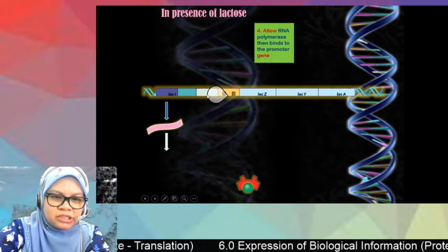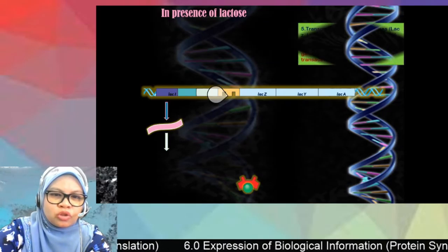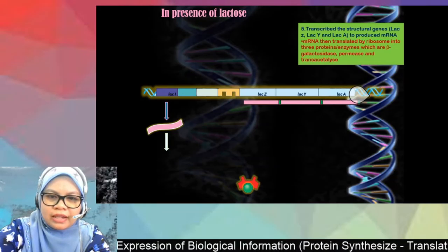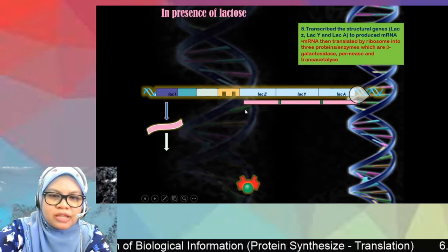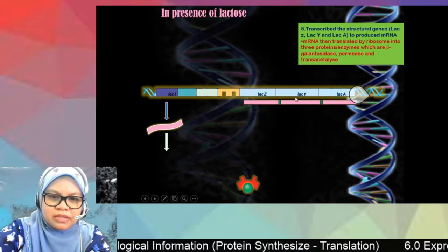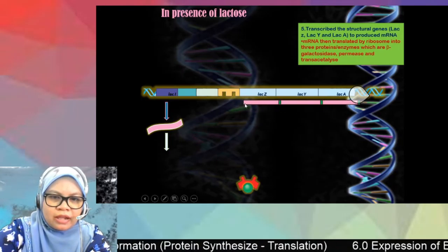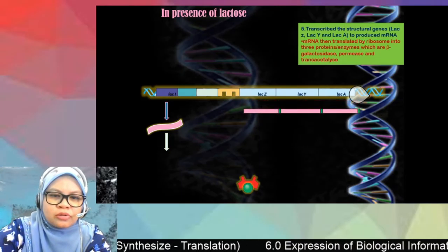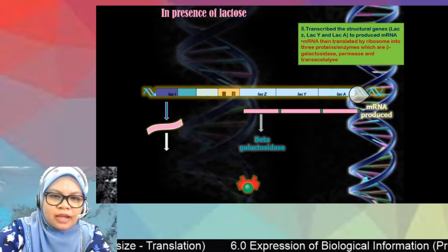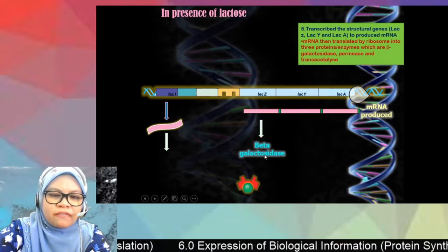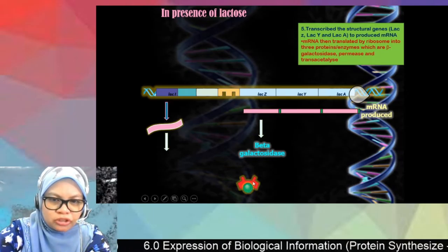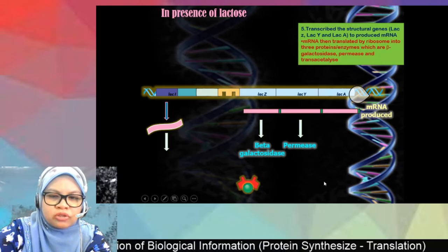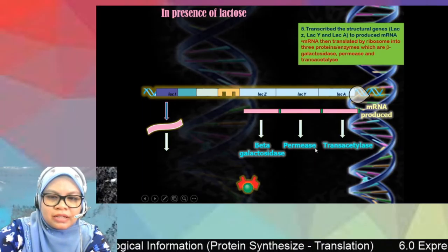Once the repressor protein detaches from the operator, RNA polymerase can bind to the promoter and start transcribing the structural genes lacZ, lacY, and lacA. The product of transcription is mRNA, which then undergoes translation. This produces the three enzymes: beta-galactosidase (which hydrolyzes lactose), permease (which transports lactose into the cell), and transacetylase.